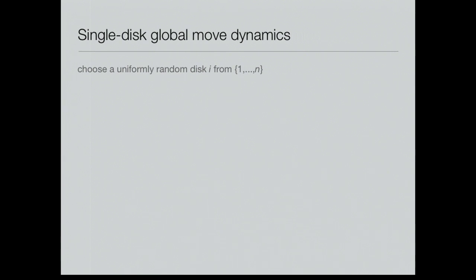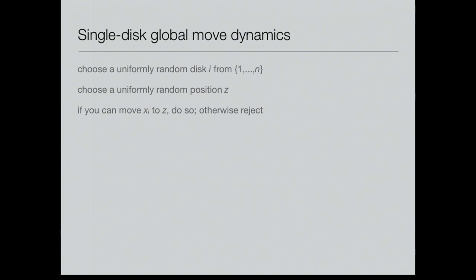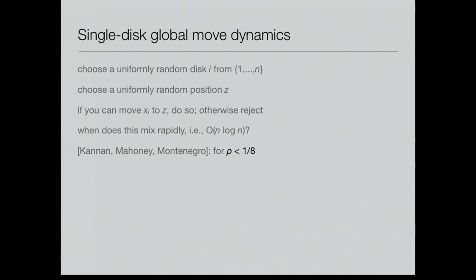At each step, we choose a uniformly random disk from the N disks, choose a uniformly random position in the entire world, and attempt to move it there — unless doing so would cause it to overlap another disk. We'd like to know when this mixes rapidly. I'll start by reviewing the result of Cannon, Mahoney, and Montenegro that it mixes rapidly up to density 1/8 — order N log N time for rho less than 1/8. They also proved polynomial time for rho equals 1/8. Our result is up to 0.154, which compared to 0.125 is not an amazing improvement, especially given that the truth is 0.7. But I hope you'll like the techniques.